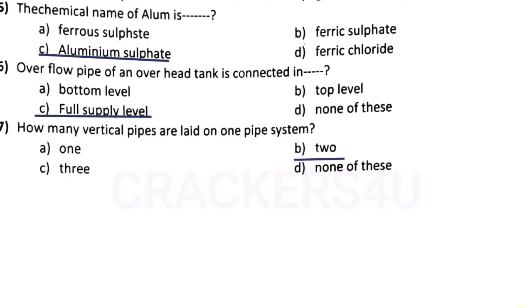Question number sixteen: how many vertical pipes are laid on one pipe system — answer option B, two pipes.